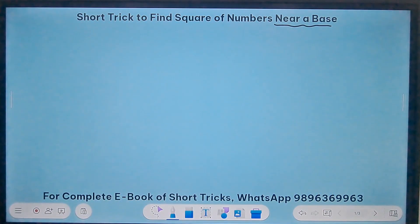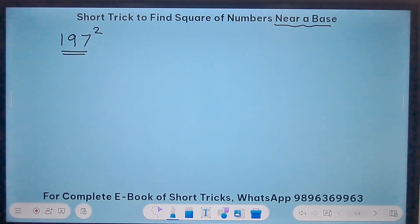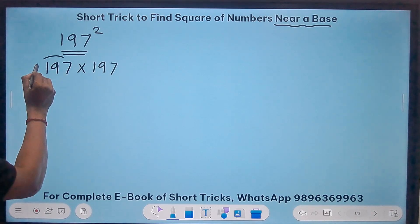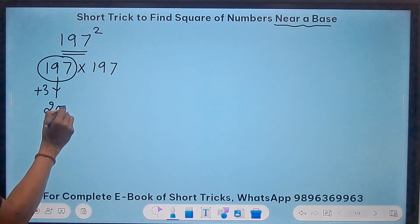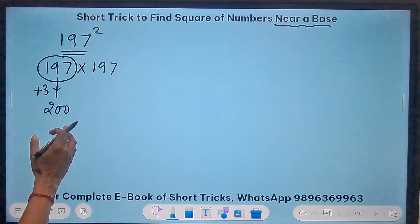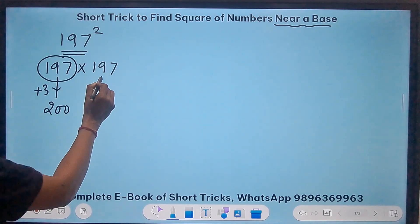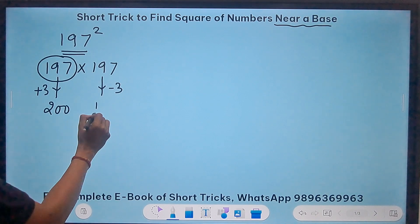Let's take the example of squaring 197. So I know that this is very close to 200. So I'll write 197 times 197 and I'll try to convert one of these numbers into the base number. So if I add 3 to this, I'll get 200. Now what do I have to do? I have to do the balancing act. The balancing act is when I have added 3 to this number, I have to subtract 3 from this number. So I get 194.